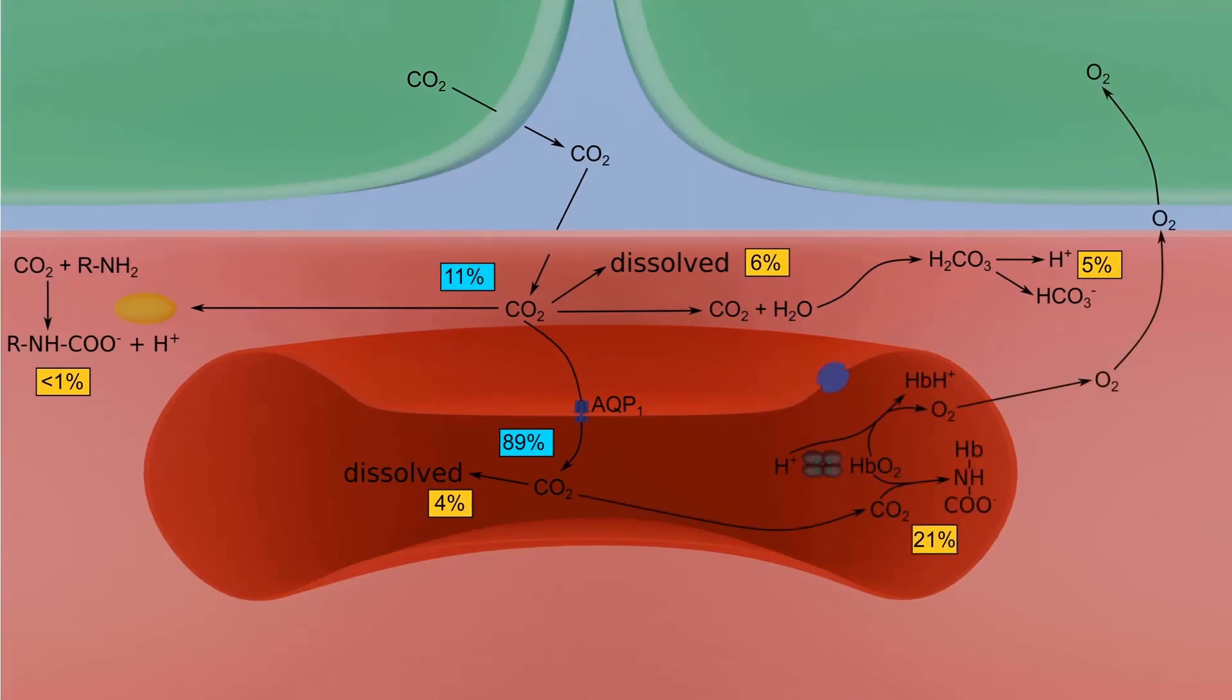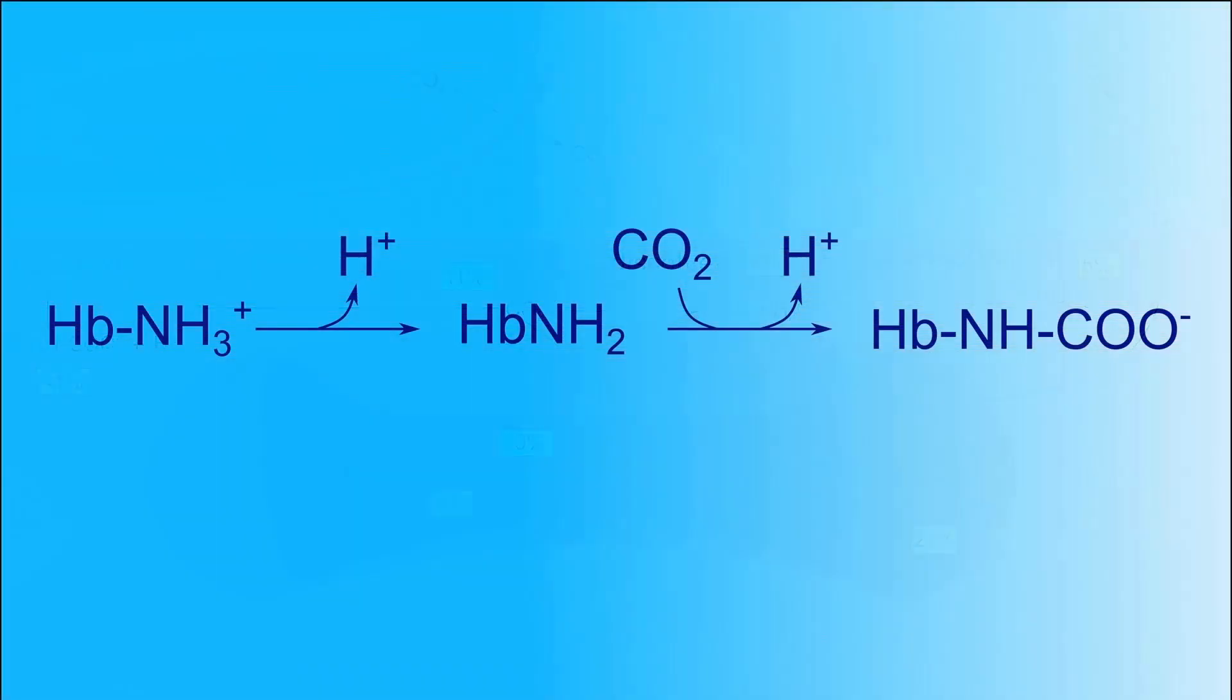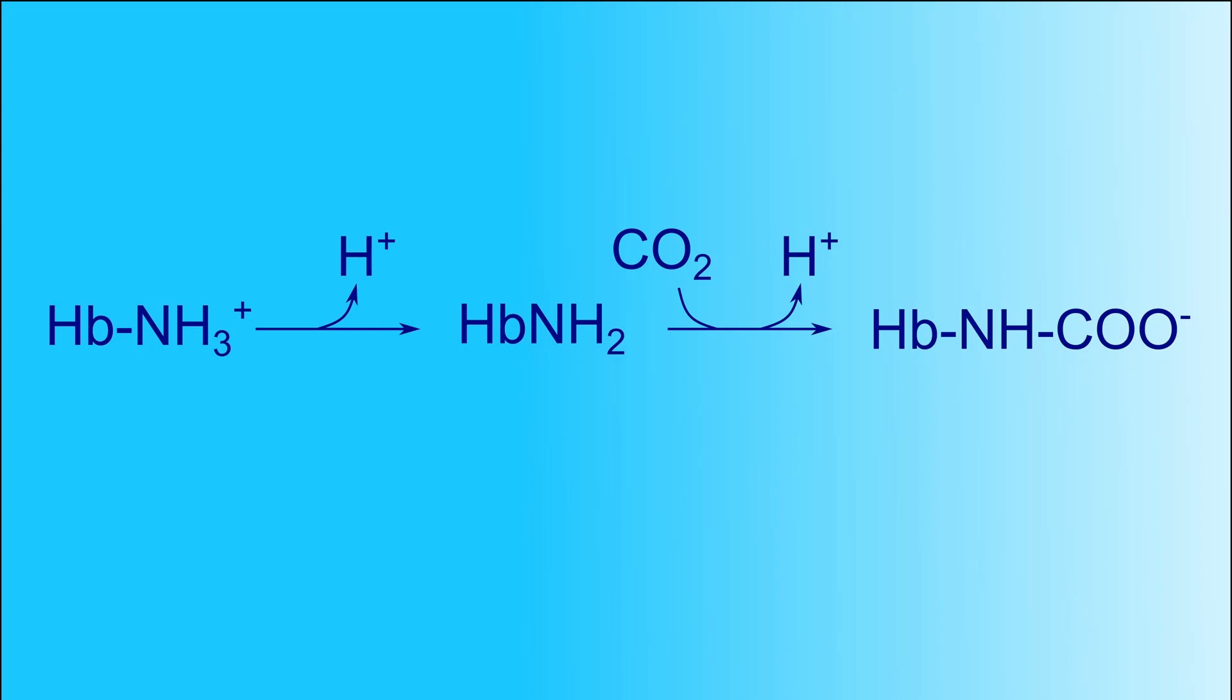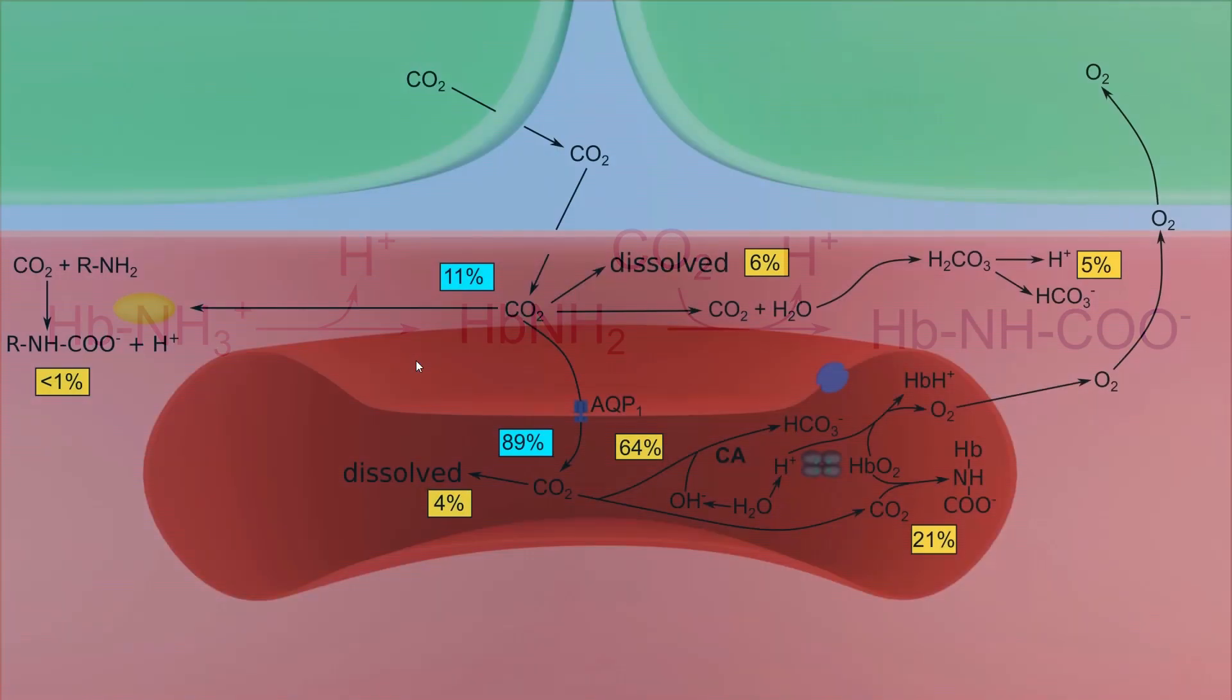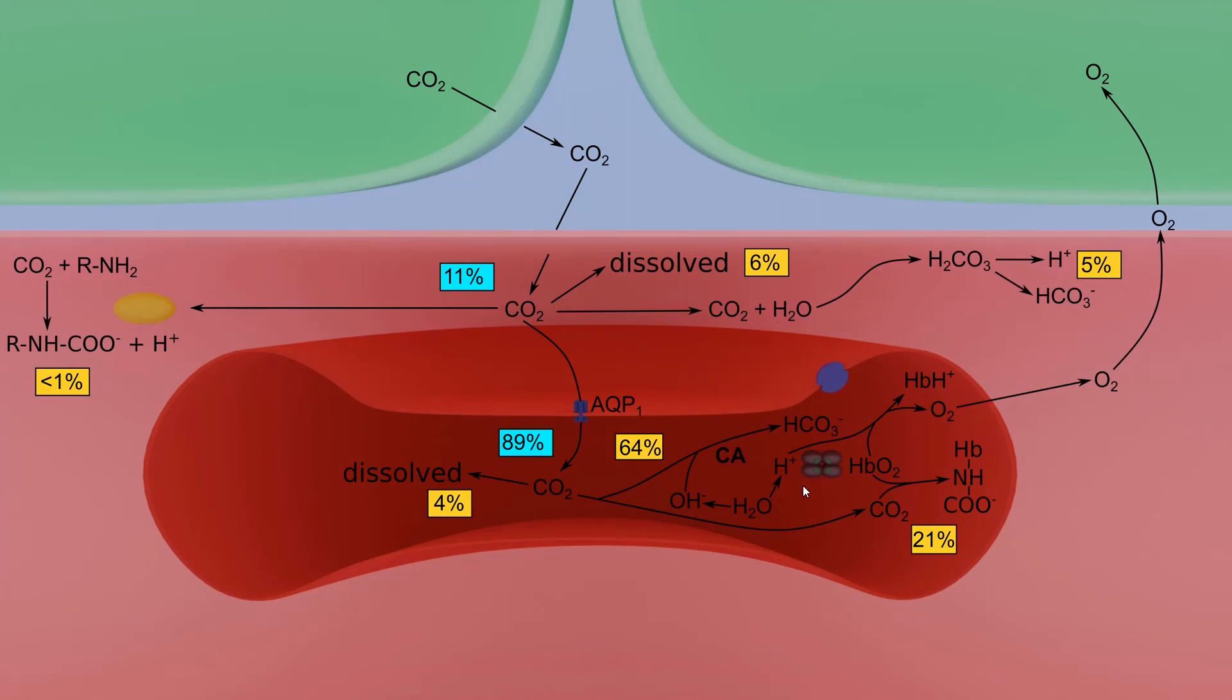Twenty-one percent of carbon dioxide binds to the amino group of hemoglobin to form carbamino compound. The hemoglobin that binds CO2 is called carbamino hemoglobin. Each hemoglobin molecule has four amino groups which can bind CO2: two in the alpha chain and two in the beta chain. When binding to the amino group, carbon dioxide displaces hydrogen ions.